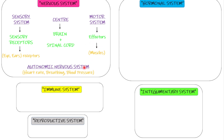The autonomic nervous system is automatic — not under conscious control. It controls almost all vital organ functions such as heart rate, breathing, and blood pressure. For example, moving your arm involves a conscious motor impulse from the brain, but you cannot simply consciously control your heart rate or blood pressure — those are controlled by the autonomic nervous system.